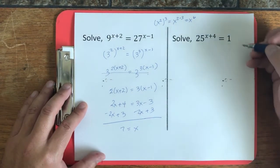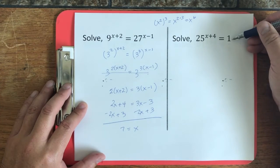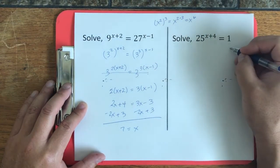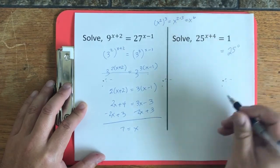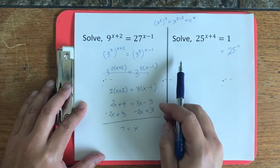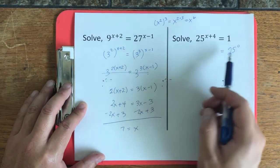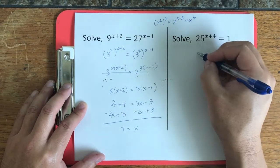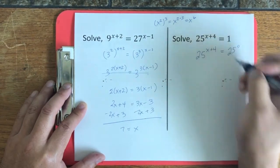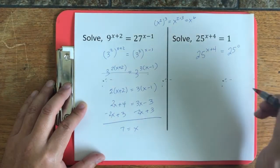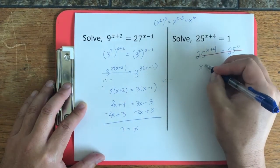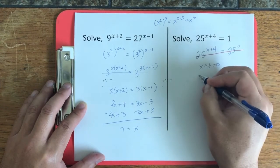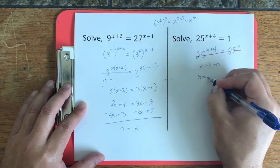Now, in this case, I'm trying to trick you by putting a 1 here. The key thing to remember is anything to the 0 power is equal to 1. So let's make it easy enough and just use the same base to the 0 power. So now that we can see that the 25s cancel, and we get x plus 4 is equal to 0, or x is equal to negative 4.